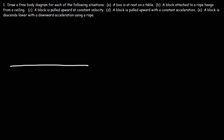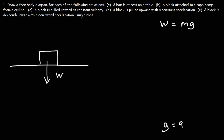A free-body diagram is a picture that shows all of the forces acting on an object. Here we have a box. We know that there's always going to be a weight force, which we can call W. The weight force is equal to the mass times the gravitational acceleration. On Earth, g is 9.8 meters per second squared.